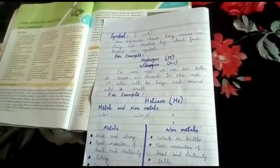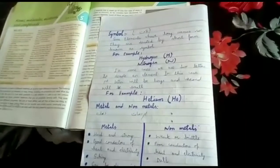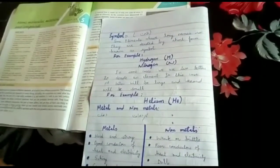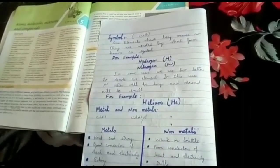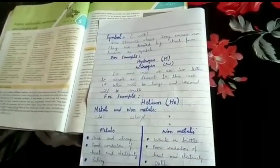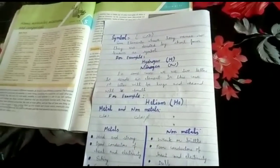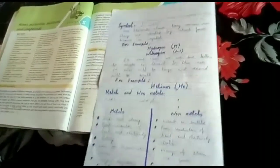We will denote the first two letters, the first letter in capitalized form and the second in small letters. For example, helium - we will denote it with capital H and small e.